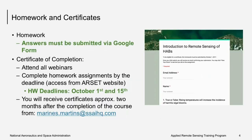The links for the two homework assignments are available now online and must be submitted through Google Forms. To receive credit for homework, you must submit the answers by the deadline. The deadline for homework one is October 1st, and the deadline for homework two, which is available today, is October 15th. To receive a certificate of completion, you must attend all four live webinars and complete both homework assignments by the due date. It takes some time to process these certificates, so you can expect to receive them about two months after the completion of the course.